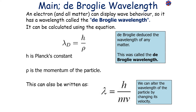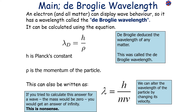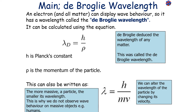This indicates we can alter the wavelength of the particle by changing its velocity. This equation can only be used for matter particles — it cannot be used to work out the wavelength of a wave, because if you try to calculate this for a wave, the mass would be zero, giving a wavelength of infinity, which is obviously nonsense. The wave nature of a particle depends on its de Broglie wavelength — the more massive a particle, the smaller its wavelength.